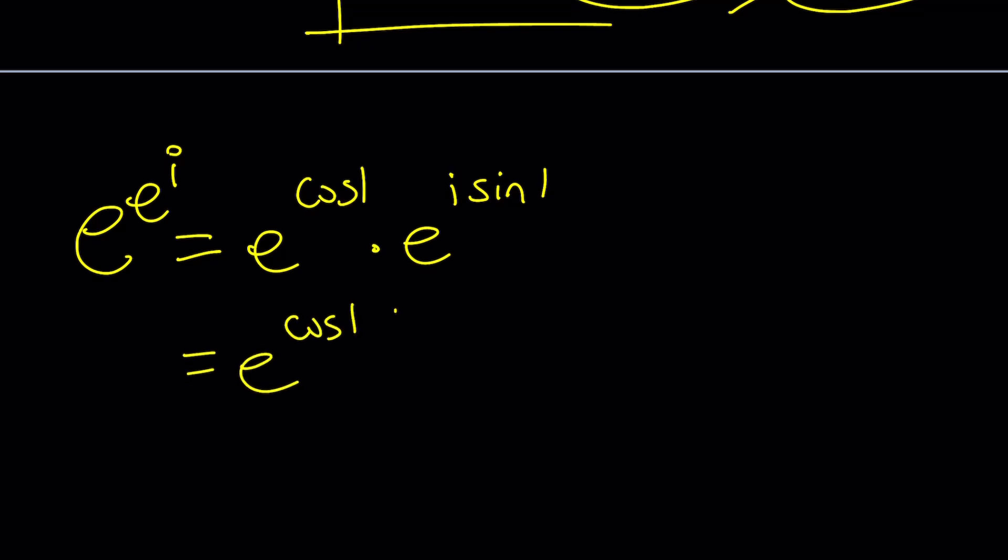Remember, we had e to the cosine 1 times e to the i sine 1. And then we separated these: e to the cosine 1, and then we wrote the e to the i sine 1 as cosine of sine 1 from Euler's formula, right? Plus i times sine of sine 1. Remember that? Okay. So, I'm going to take it from here, okay?